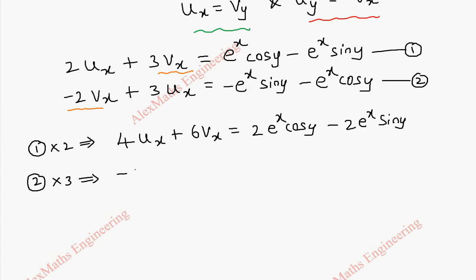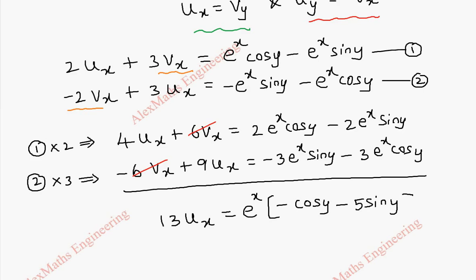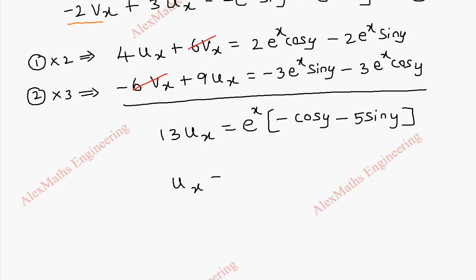When we multiply the second equation by 3, we get minus 6vx plus 9ux equal to minus 3e power x sin y minus 3e power x cos y. When we add these two equations, we can cancel 6vx and minus 6vx. Adding gives 13ux equal to e power x common, and 2 cos y minus 3 cos y is minus cos y, and minus 2 sin y minus 3 sin y is minus 5 sin y. So ux equals e power x over 13 into minus cos y minus 5 sin y.